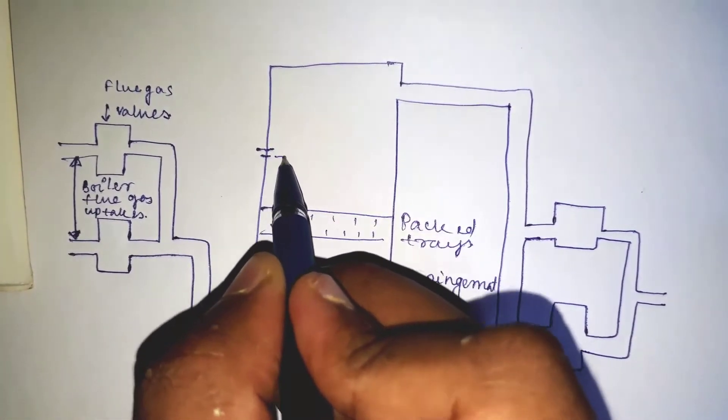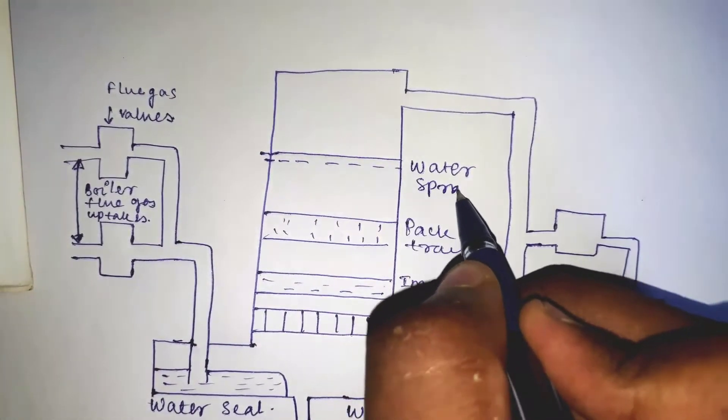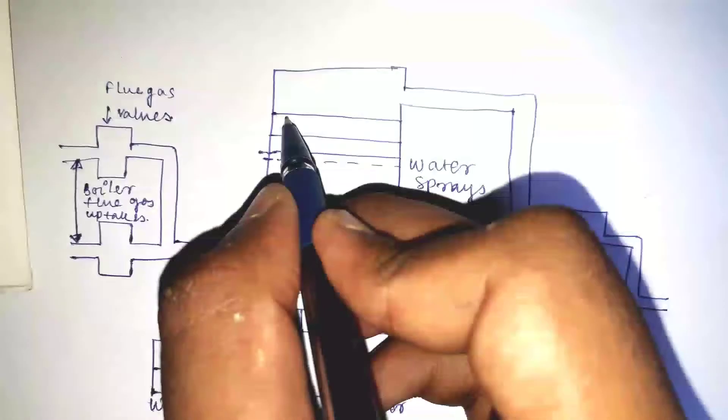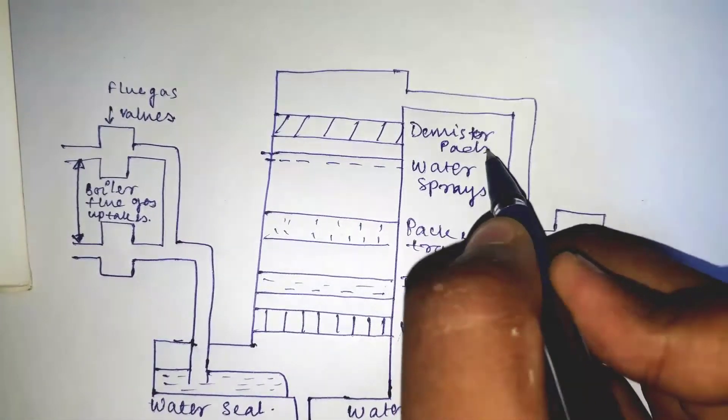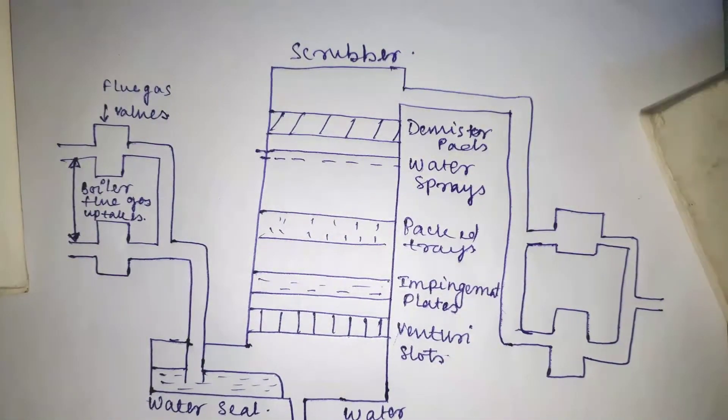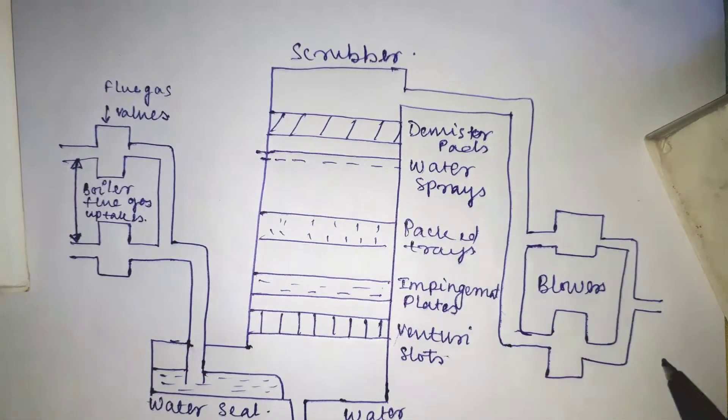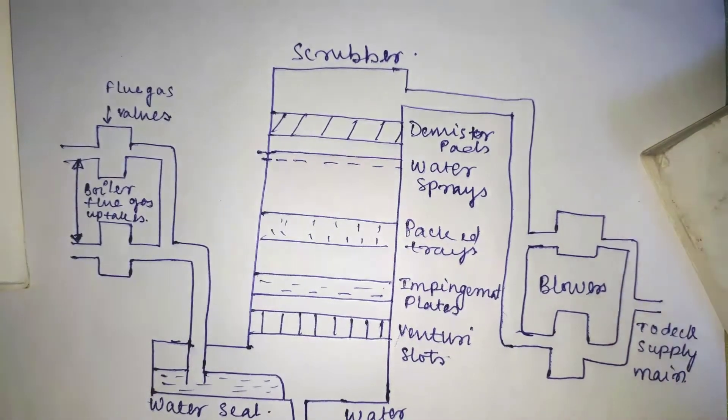Scrubber. The scrubber has a threefold purpose: first, to cool the flue gas; second, to remove most of the sulfur dioxide; third, to remove most of the soot particles. The design of the scrubber varies considerably, but in all scrubbers, flue gas is brought into contact with large quantities of sea water by which the gas is cooled and cleaned.